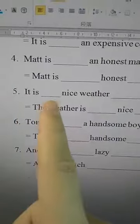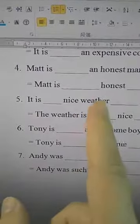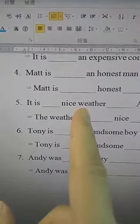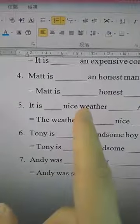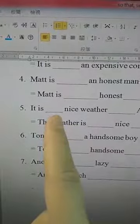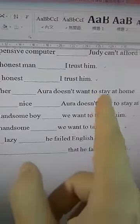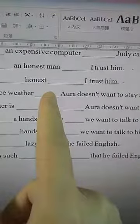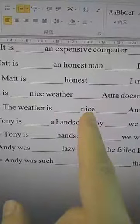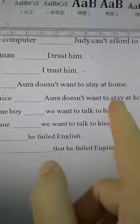Number five: 'It is ___ nice weather ___ Era doesn't want to stay at home.' Remember: 'weather' is an uncountable word, so you don't have to use 'a' or 'an.' The answer is 'such': 'It is such nice weather that Era doesn't want to stay at home.' The equivalent 'so that' version: 'The weather is so nice that Era doesn't want to stay at home.'